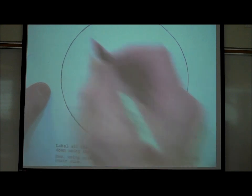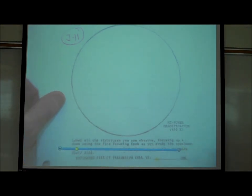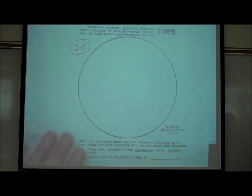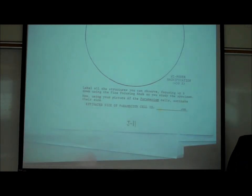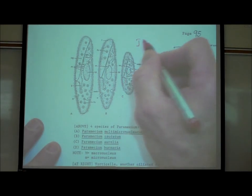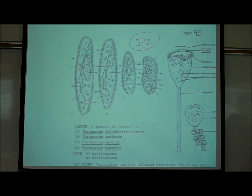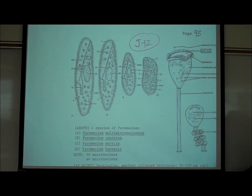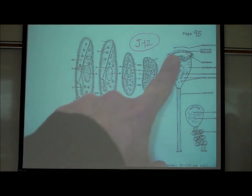On page J11, there's a place to draw a picture of a paramecium seen under a microscope. We have a video linked on the website where you can see images of all these organisms. On J12, there are many other types of ciliated paramecium — each class of protozoans has thousands of species, and we are examining just one or two examples per category.